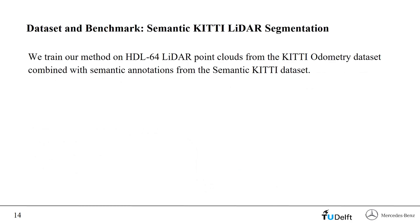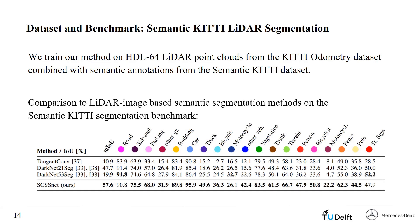We train our method on the LiDAR point clouds of the KITTI odometry dataset, recorded using a Velodyne scanner featuring 64 scanlines. All sequences have been annotated with a rich set of 19 semantic classes by the Semantic KITTI dataset. The Semantic KITTI dataset also features a semantic segmentation benchmark on LiDAR data, where we submit our test set predictions for evaluation. This benchmark is based on the popular mean intersection over union metric. The baseline methods in the top three rows are based on the projection of all LiDAR points onto a 2D cylindric image plane. Even though our SCSSnet method is designed to make semantic predictions for the complete 3D scene and to differentiate between occupied and free regions, it still outperforms the image-based methods for semantic segmentation.